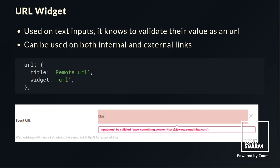Then there is the URL Widget. Volto needs a URL widget, which can be used on text inputs and validates the value as a URL. It supports both internal and external links and provides validation errors when the input value is not a valid URL. Registering it on your schema field only requires setting the widget name to 'url'.